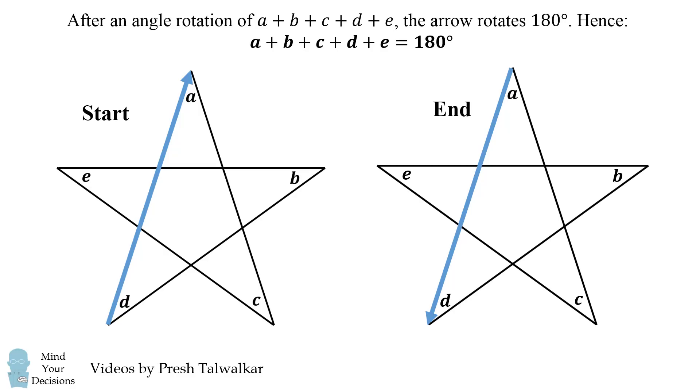So while this doesn't prove the answer, it does give us some idea of what the answer will be. And from there you might think that, well, 180 degrees is half of a circle, or 180 degrees is equal to the sum of the angles in a triangle. And both of these insights can help us prove the answer is 180 degrees.